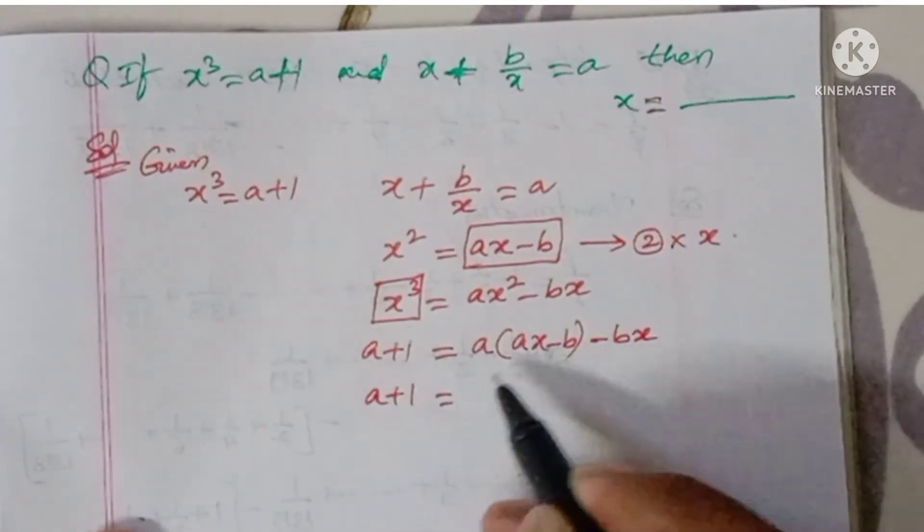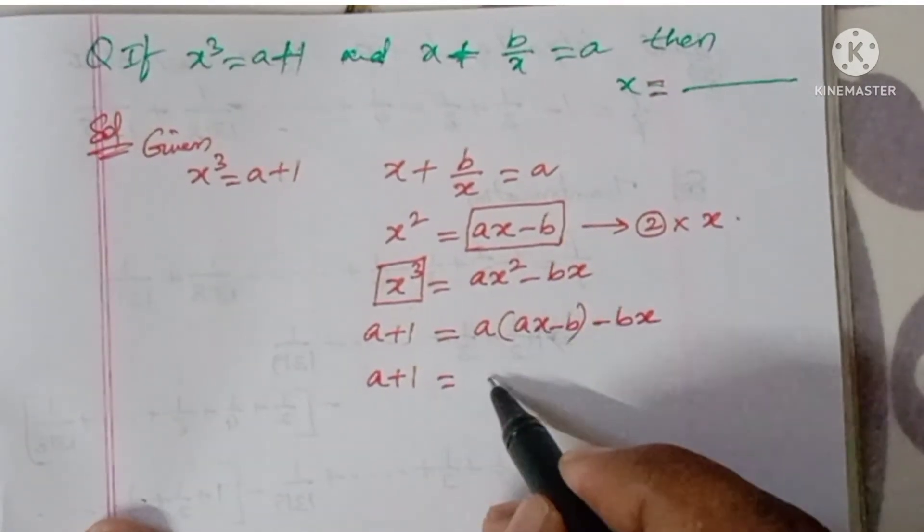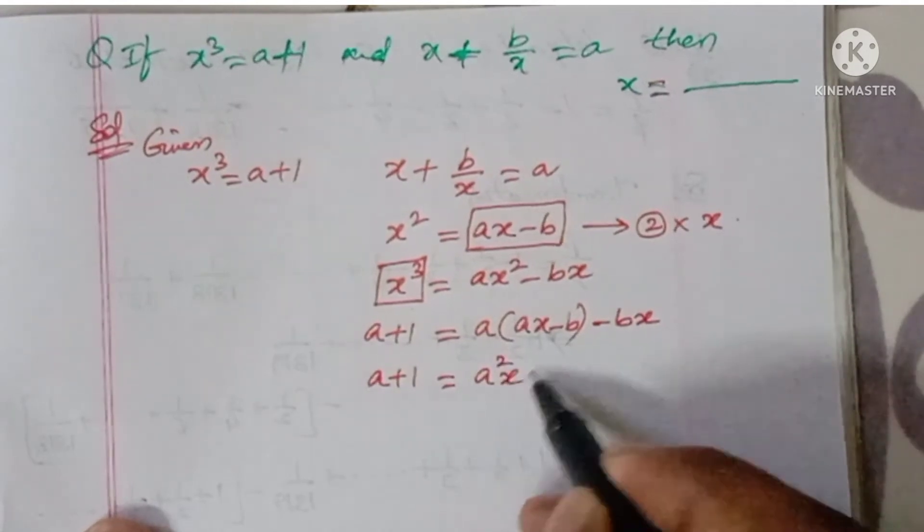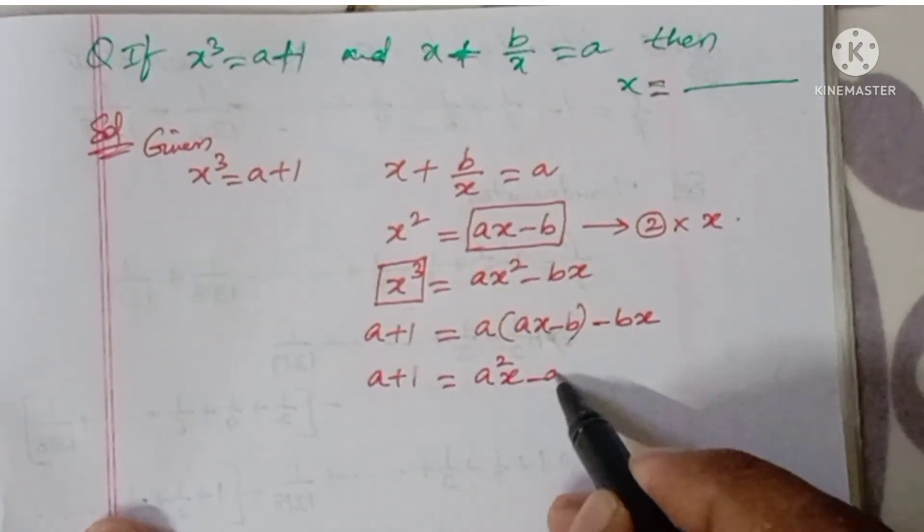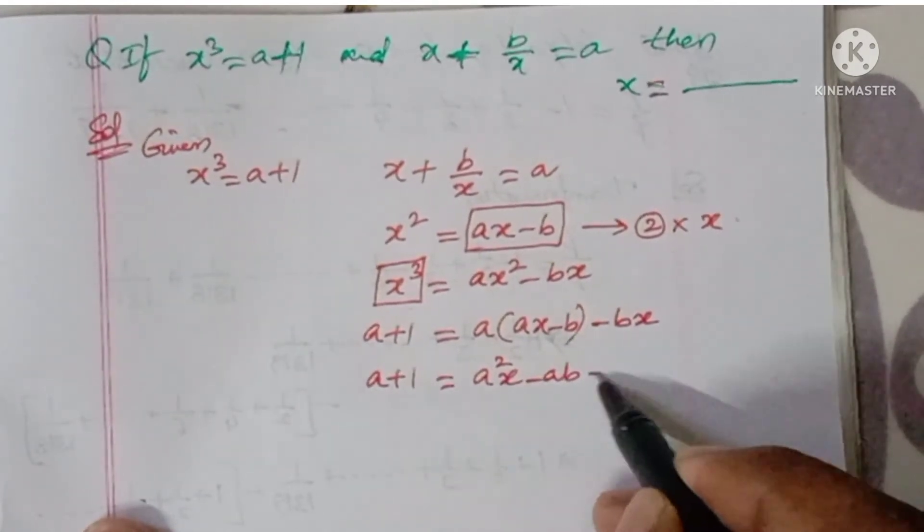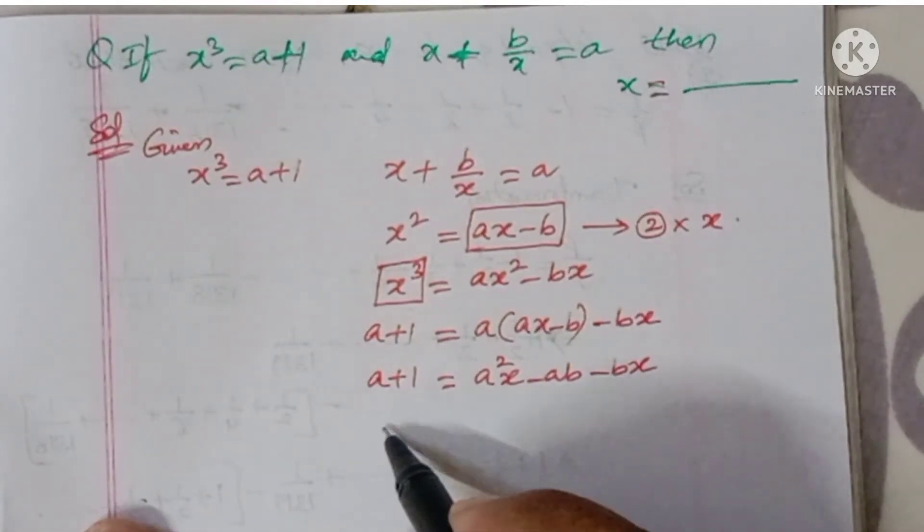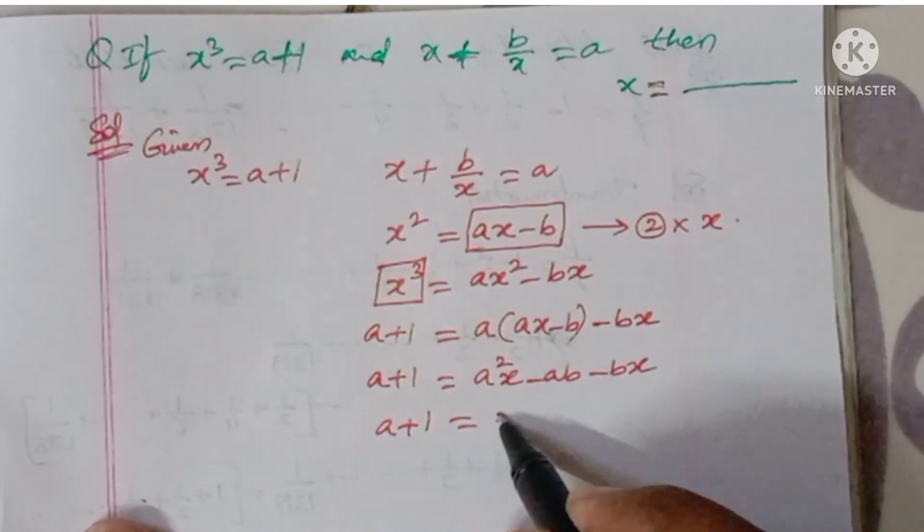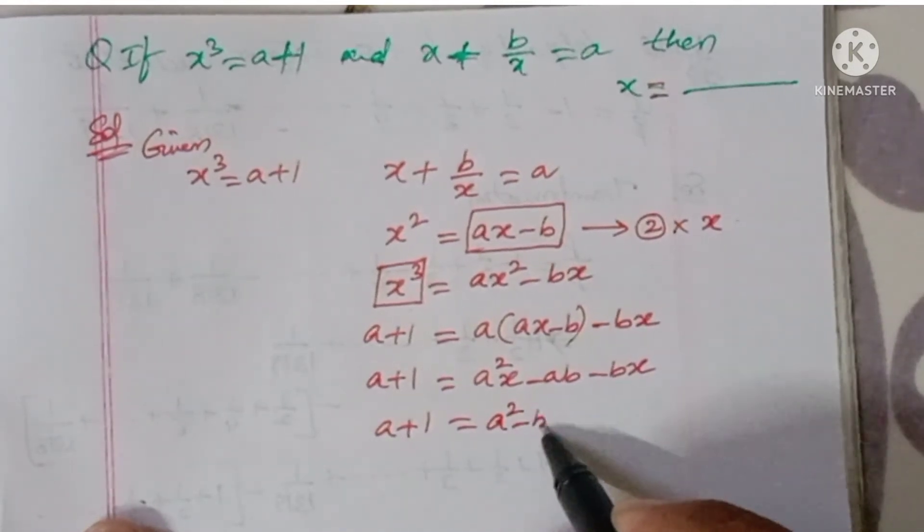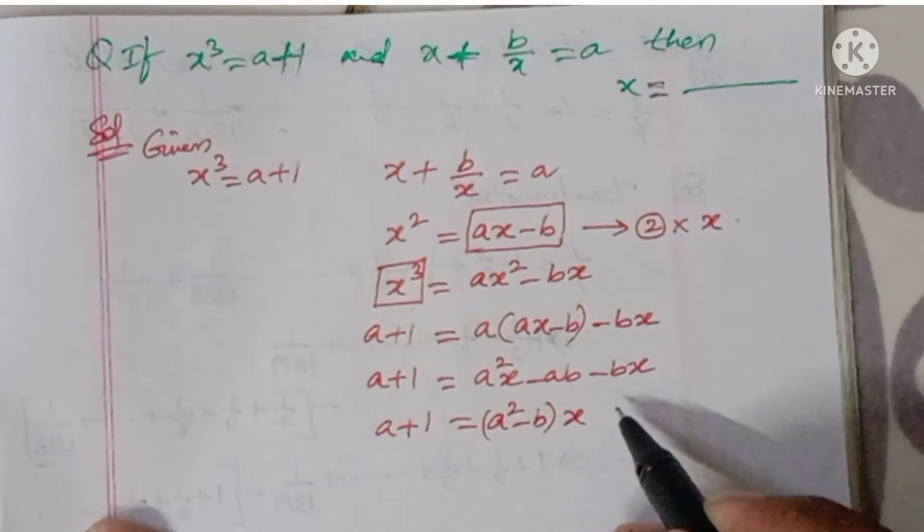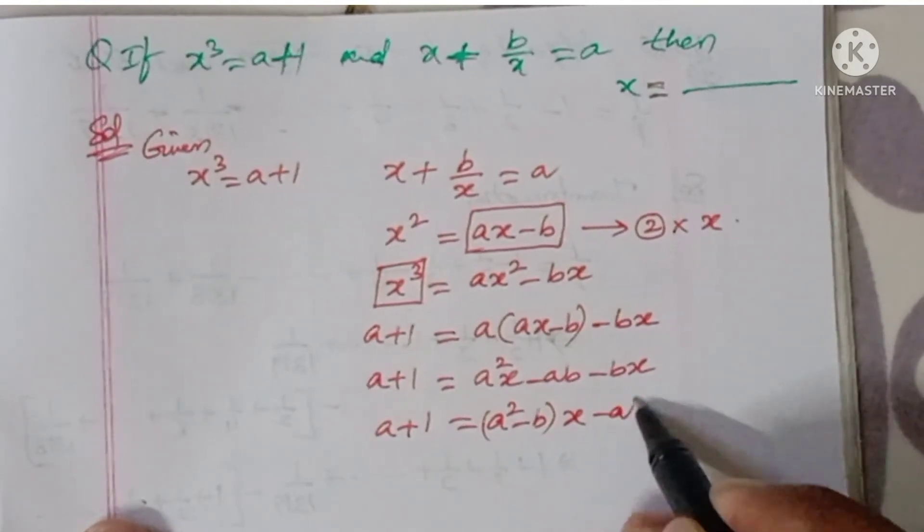a+1 is equal to a²x minus ab minus bx. So a+1 is equal to (a² - b) into x minus ab.